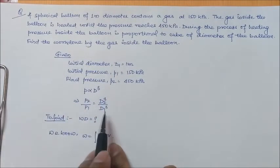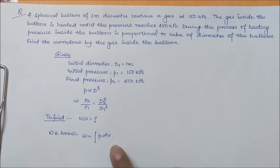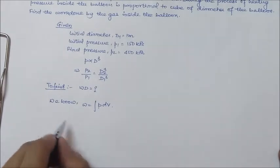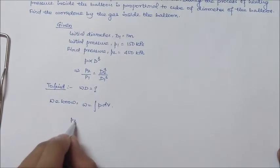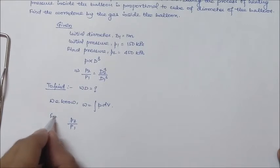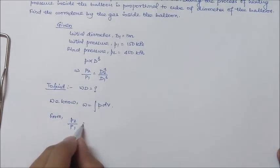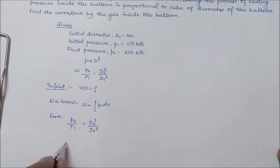So we are calculating the final diameter. From p2 by p1 is equal to d2 cube by d1 cube, we have pressure as 450 for p2 and p1 is 150. d2 we have to find out, d1 is 1. From here, d2 is equal to 1.44 meter.